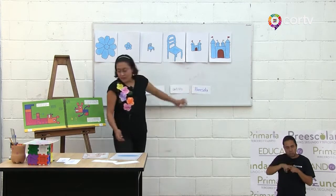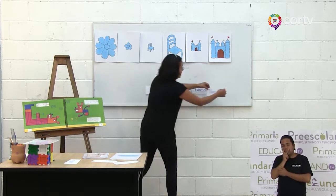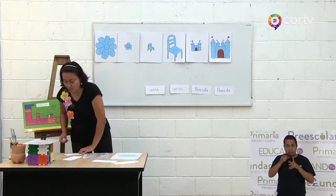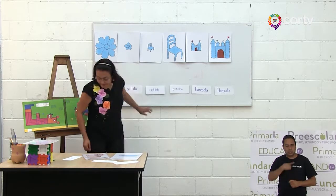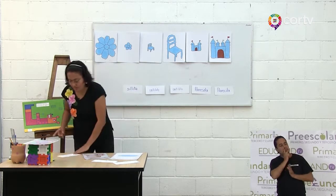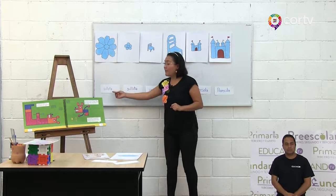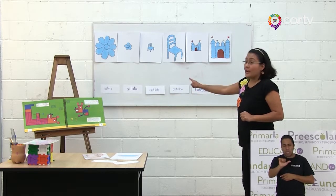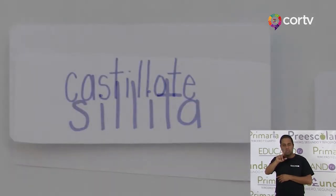Vamos a ver. Me vas a ir ayudando a acomodar estas palabras en el lugar que les corresponde. ¿Has comenzado a leer y a ubicar? Muy bien. Estoy casi a punto de terminar de pegar todas las palabras. ¿Qué palabra está escrita al inicio? Tenemos la palabra sillota, la palabra sillita, y la palabra castillote, castillito, floresota y florecita.